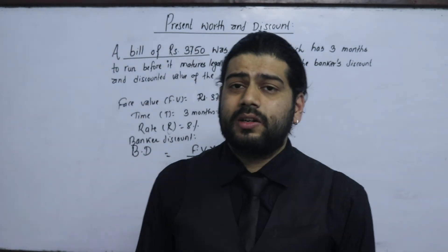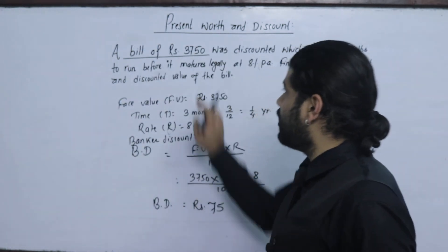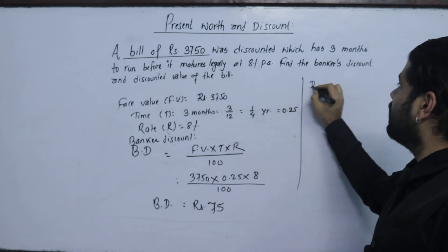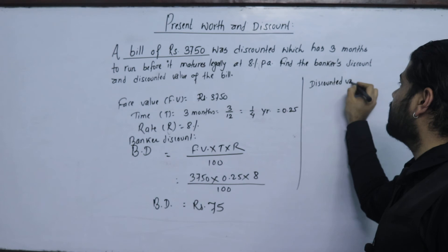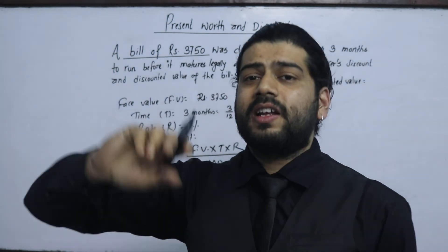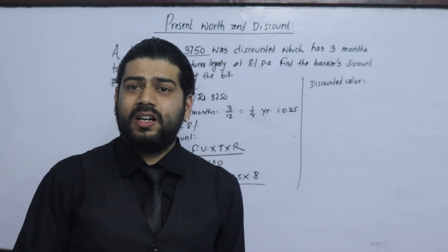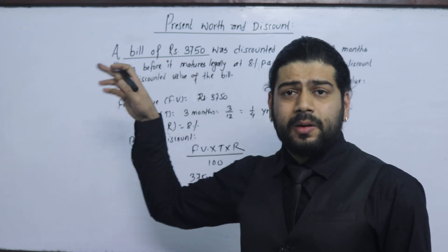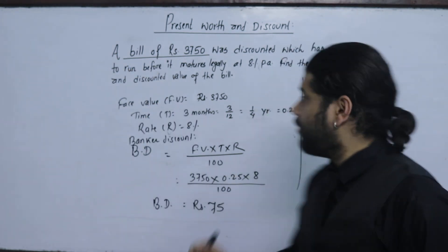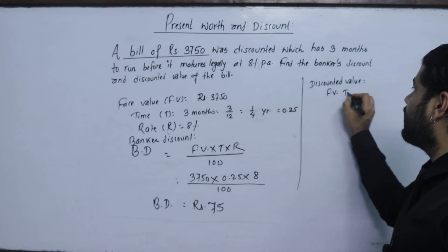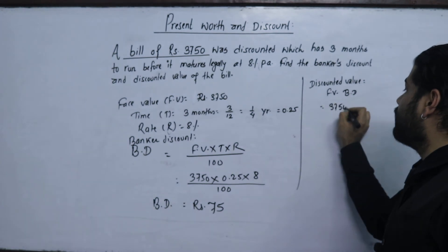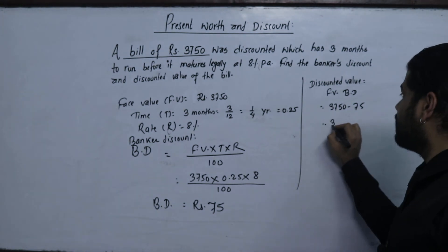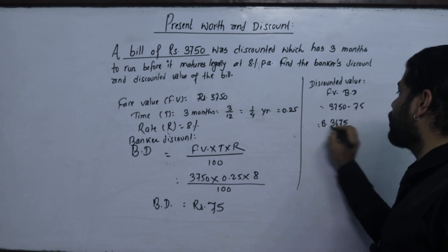Now find the discounted value. The discounted value is the face value minus the banker's discount. So discounted value = Rs.3,750 − Rs.75 = Rs.3,675. This is the discounted value of the bill.